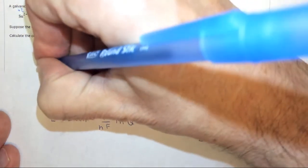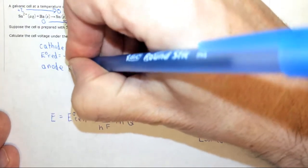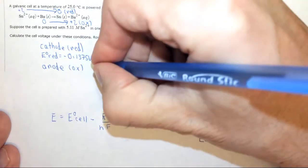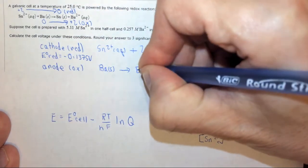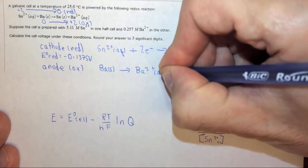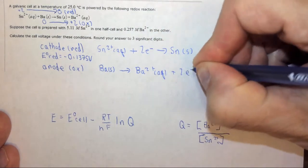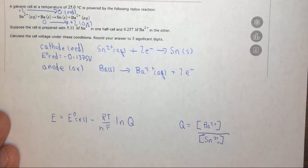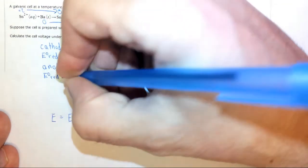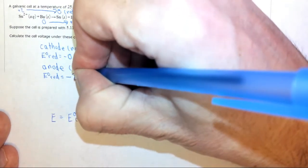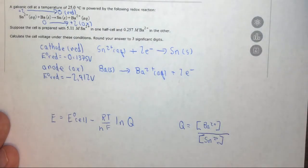At the anode, where of course oxidation is occurring, we have barium solid yields Ba 2 plus aqueous, and of course it lost two electrons, so plus two electrons. The standard reduction potential for this one is negative 2.912 volts, and again we just looked that up on the table.